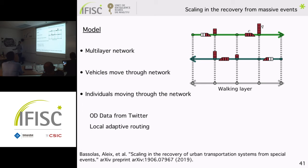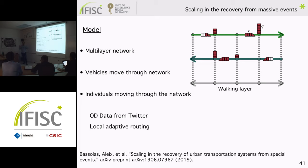To study these massive events, we developed a simplified model to mimic the movement of individuals through the public transportation system. The main ingredient is a multilayer network: we have different transportation lines in different layers and a walking layer at the bottom where individuals can move with infinite capacity. Vehicles run through transportation lines according to real timetable frequencies, with a limited number of individuals that can fit inside. Individuals move freely through the walking layer, enter a transportation line, queue to board a vehicle, and travel through the line. Their origins and destinations are extracted from Twitter, following home-to-work patterns, and they use a local adaptive routine — going stop by stop, reevaluating their route at each stop based on observed congestion.